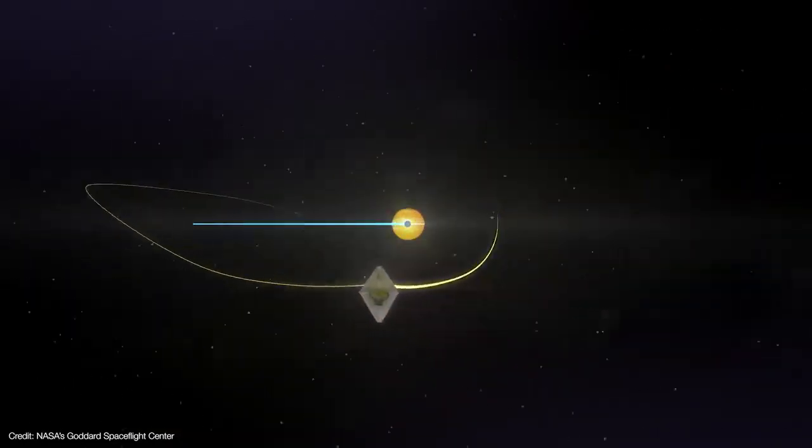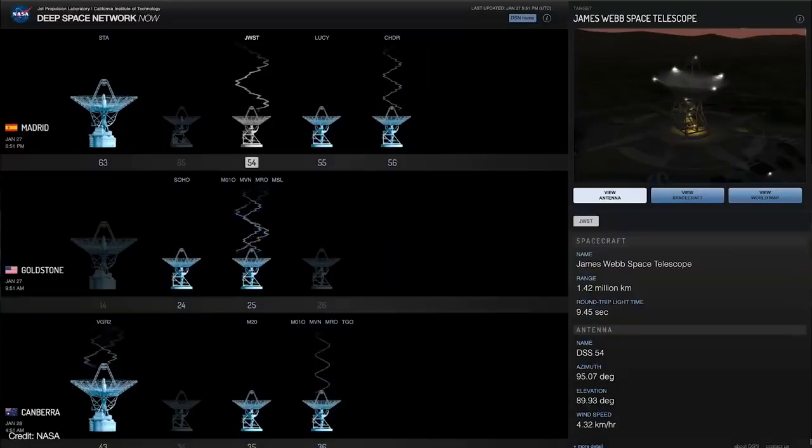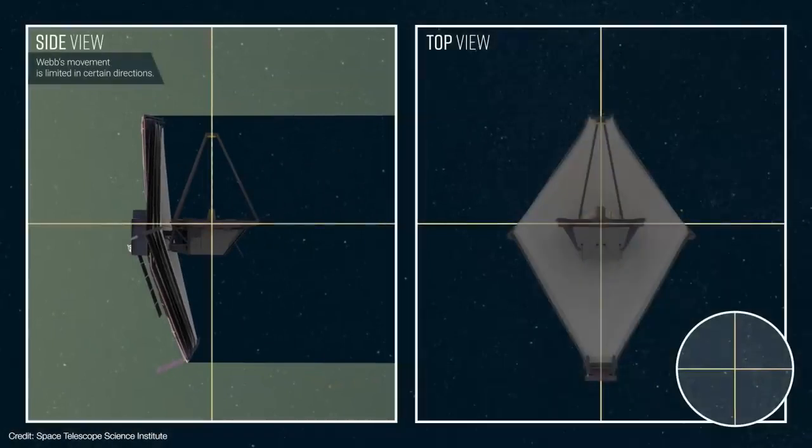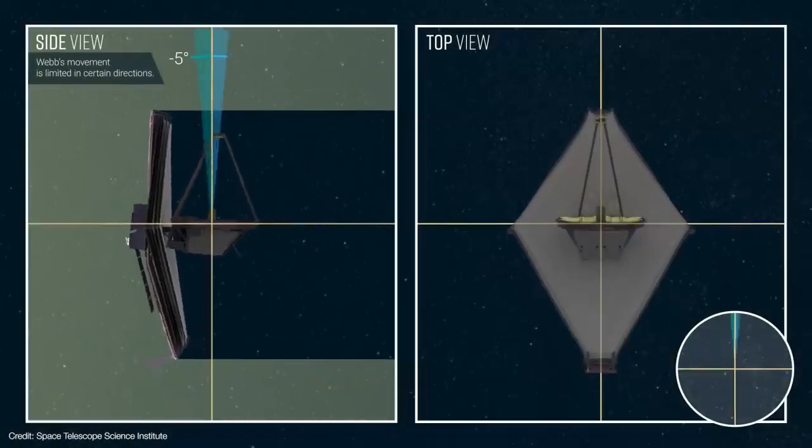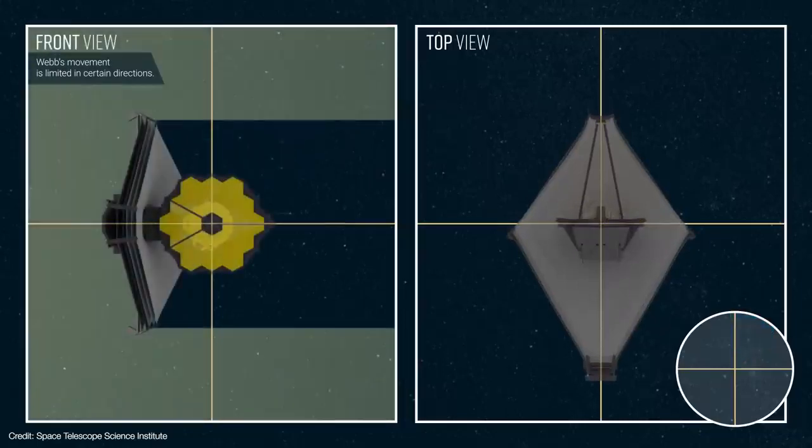However, larger orbits can permit stray light from the Earth or moon to get past the sun shield and reach the primary or secondary mirrors. In addition, a larger orbit can reduce the number of communication opportunities with the deep space network. That's why Webb will have to change its orientation to keep stray light off the mirrors at all times throughout its orbit and schedule the communication downlinks accordingly.